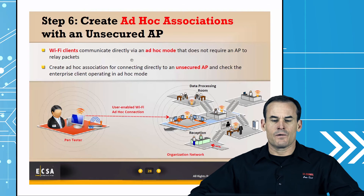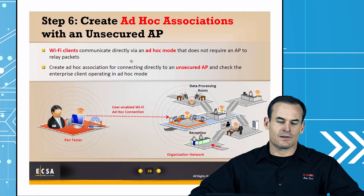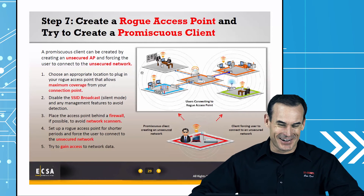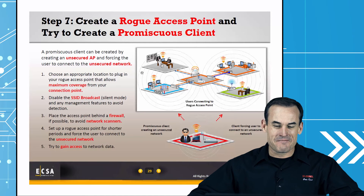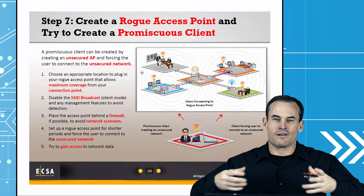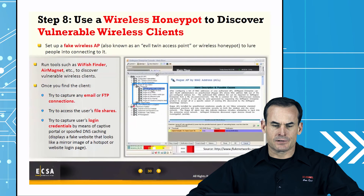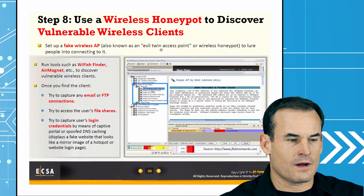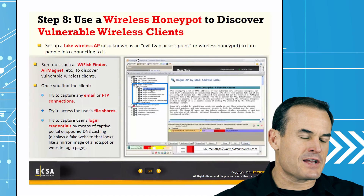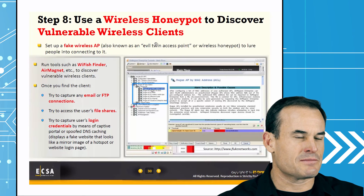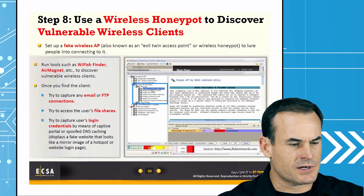Create ad hoc associations with an unsecured AP or unsecured client — you can establish a direct point-to-point connection. Create a rogue access point and try to connect a promiscuous client: if you stand it up, they will come. I've been in situations where I've stood up an access point without a password and clients just connect. Free public Wi-Fi, mimicking the SSID of the target organization — these are all considerations from CEH. The Wi-Fi Pineapple is fantastic for setting up impersonation attacks, and you can then try to capture email, FTP connections, users' file shares, et cetera.